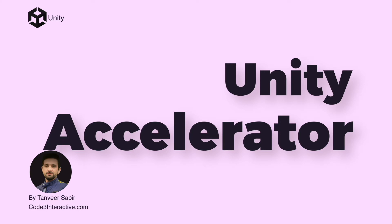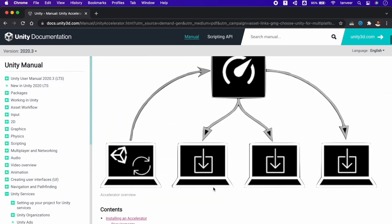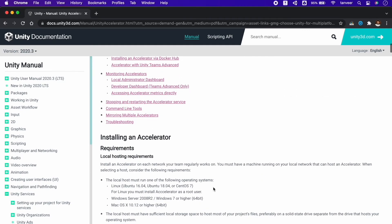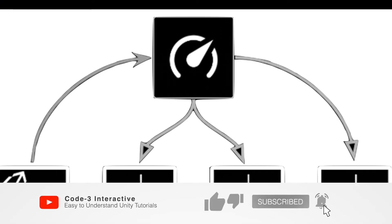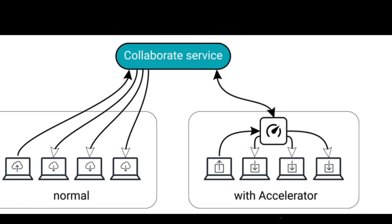The Unity Accelerator removes waiting time by caching copies of your team's assets. This means that only one person needs to perform the actual import, and the result will automatically be cached to the Unity Accelerator. The next time a team member goes to import the same version of an asset, the Unity Editor first checks the cache before starting the import process on their local machine.